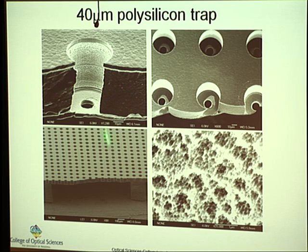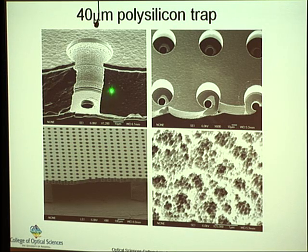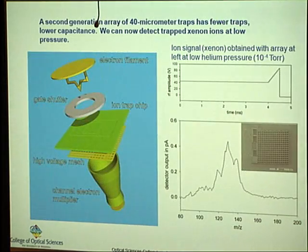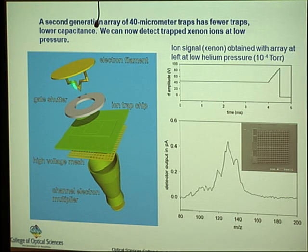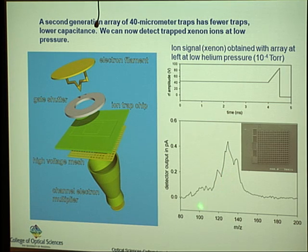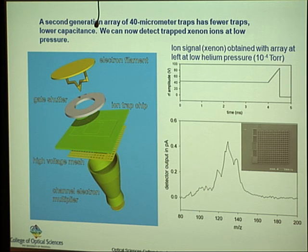We have not just one ion trap but an array of them, microfabricated at Bell Lab, consisting of three electrodes: a top ring, middle ring, and bottom ring electrode. We actually got this to work. The setup uses the chip with an ionization source — field emitters — and a detector, a channeltron. This is one of our first results demonstrating pretty low-resolution mass spec, but it was the first time anybody had done mass spectrometry using a microfabricated trap of this dimension.